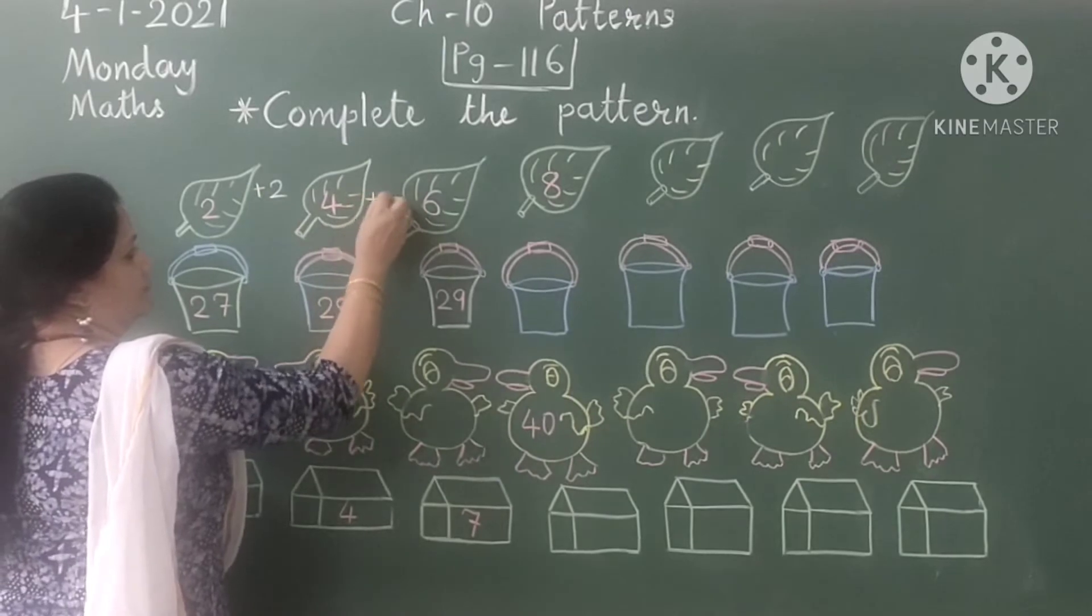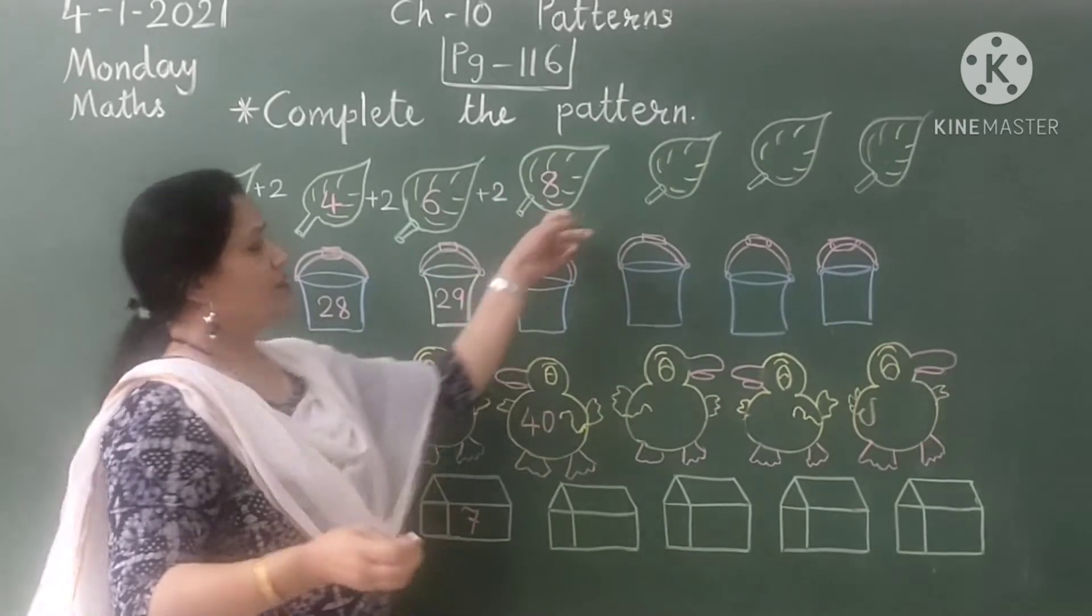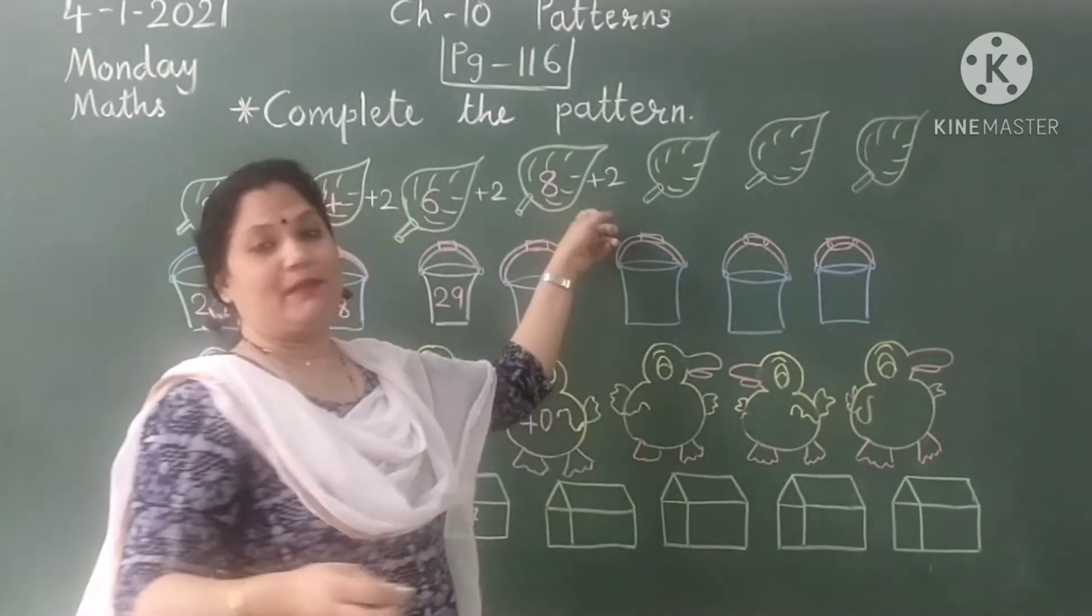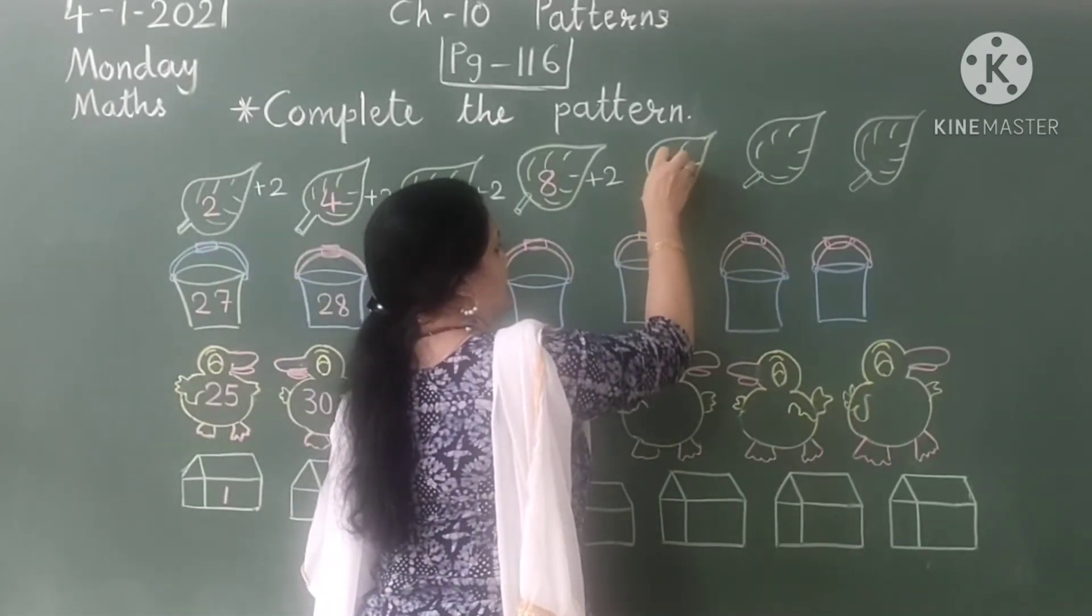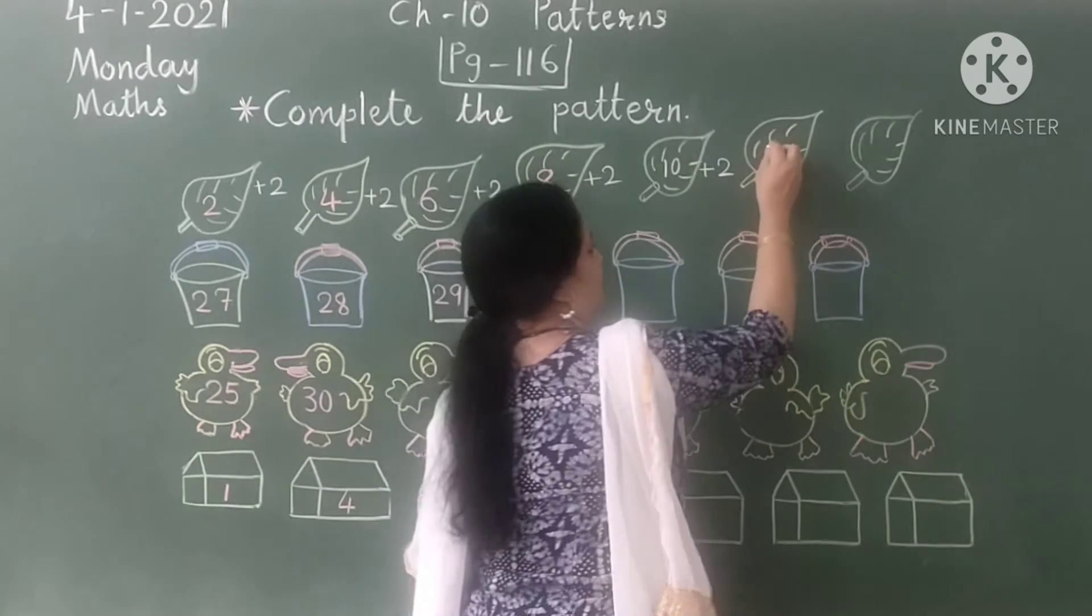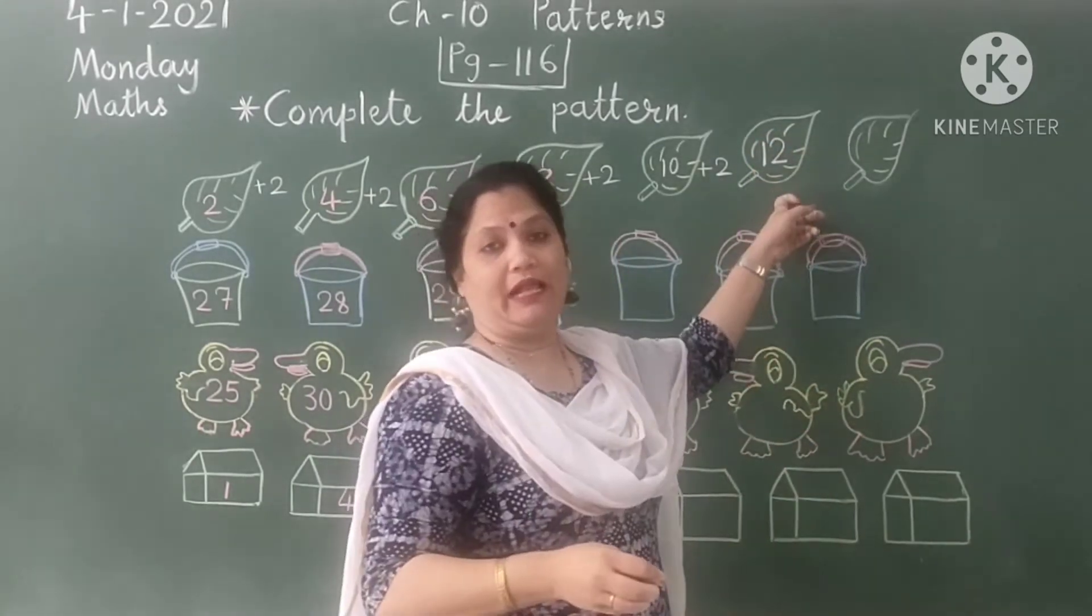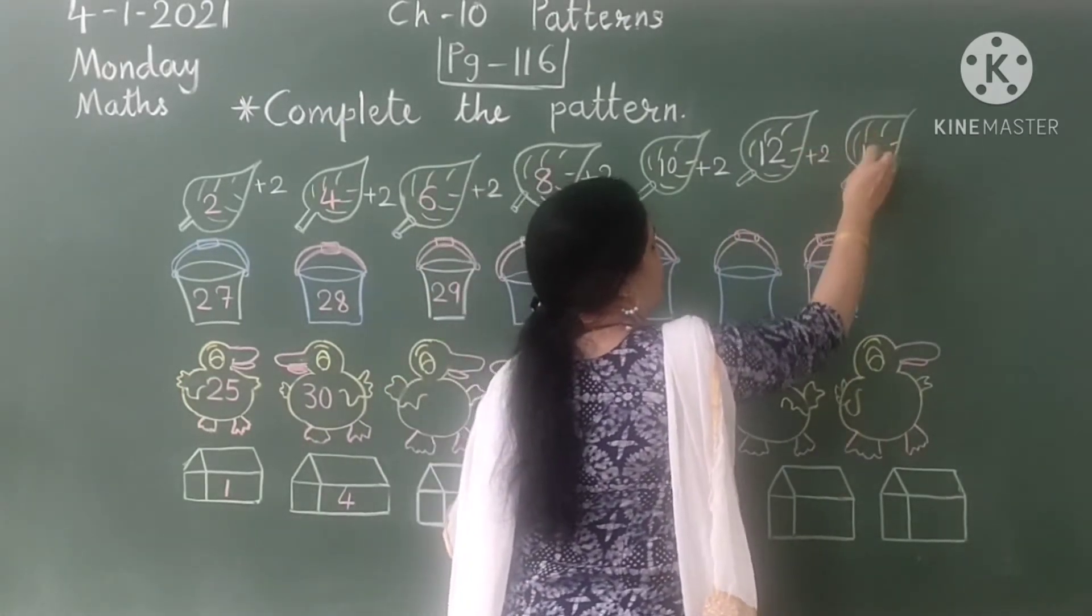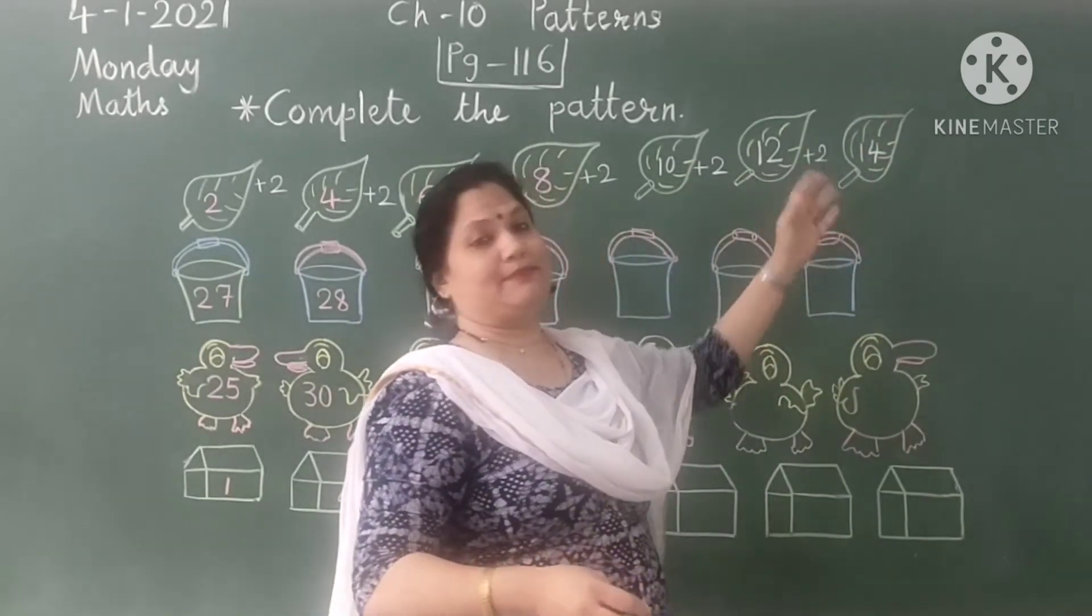So after 8, we have to add 2 more. 8 plus 2 is 10. Then 10 plus 2 is 12. After 12, we have to add 2, it is 14. So this pattern is completed.